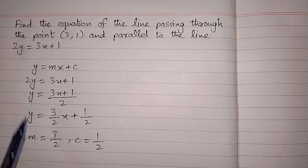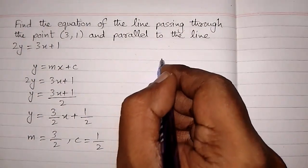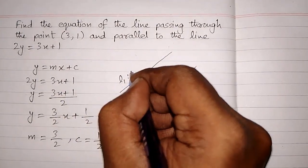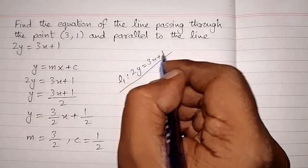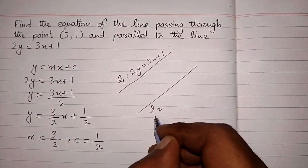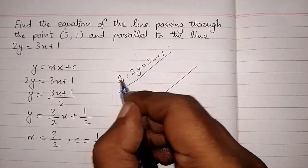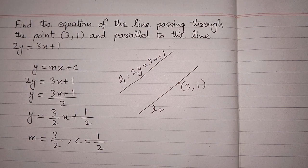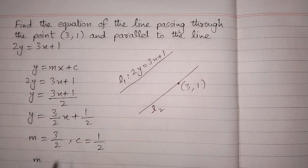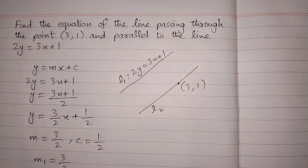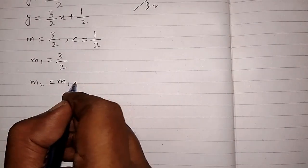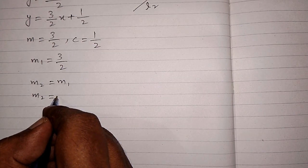Now we have to find the equation of the line parallel to this line and passing through the given point. Let L1 be the line 2y = 3x + 1. We need to find line L2 parallel to L1. For parallel lines, the gradients are equal, so M2 = M1 = 3/2.